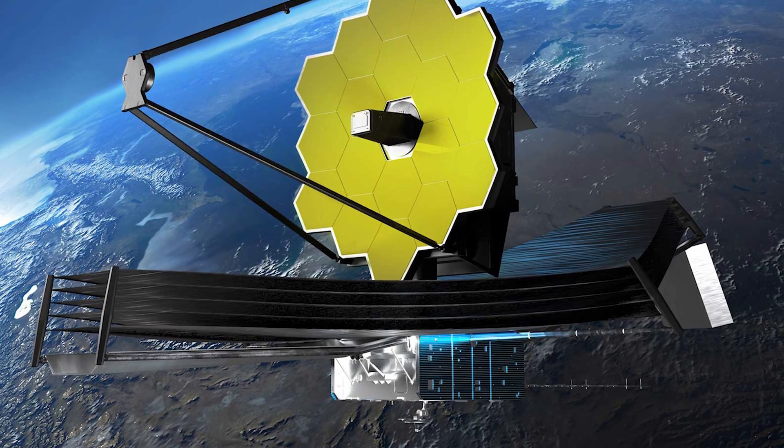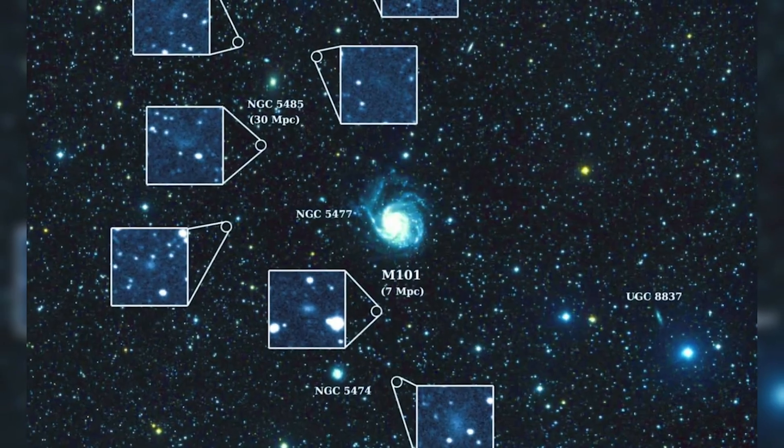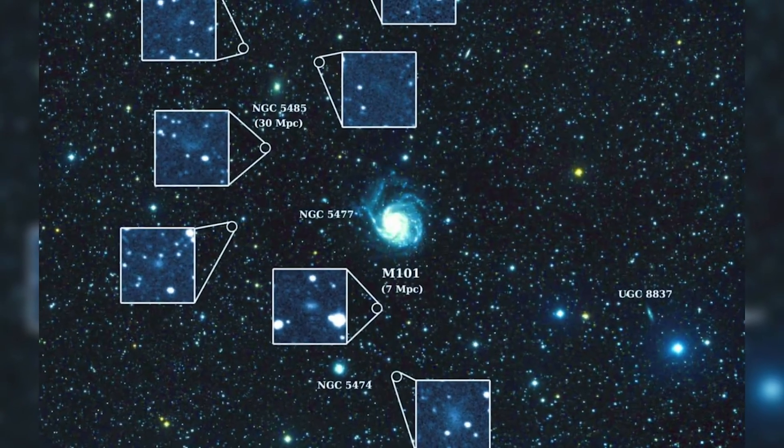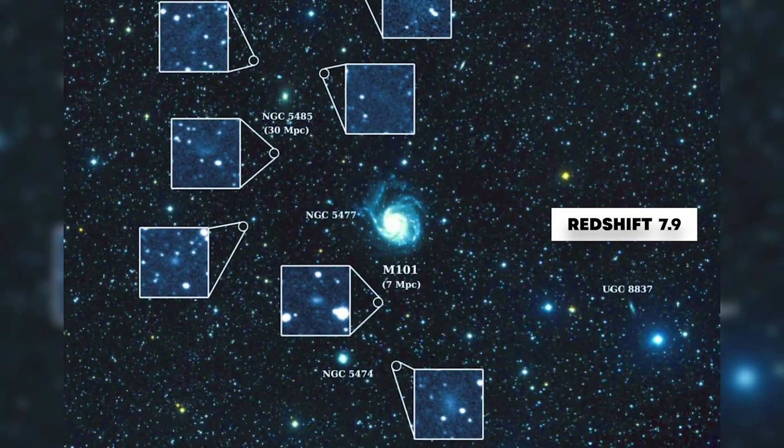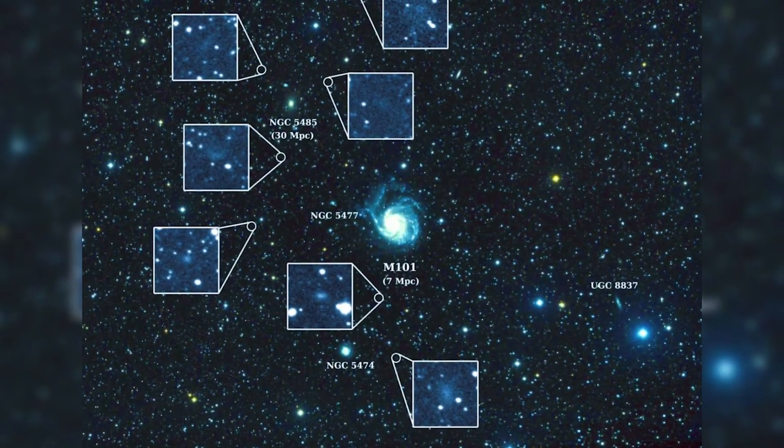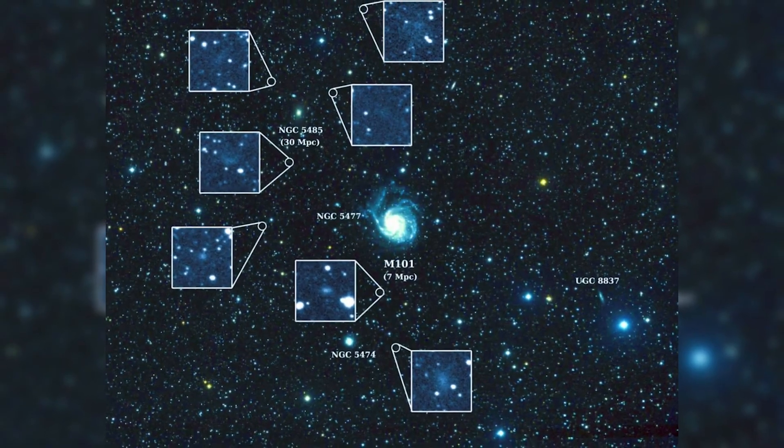But then, Webb arrived, and the conversation changed. In one of its most striking findings, NASA announced the detection of a cluster of seven galaxies at a redshift of 7.9, meaning we are seeing them as they were only about 650 million years after the Big Bang.